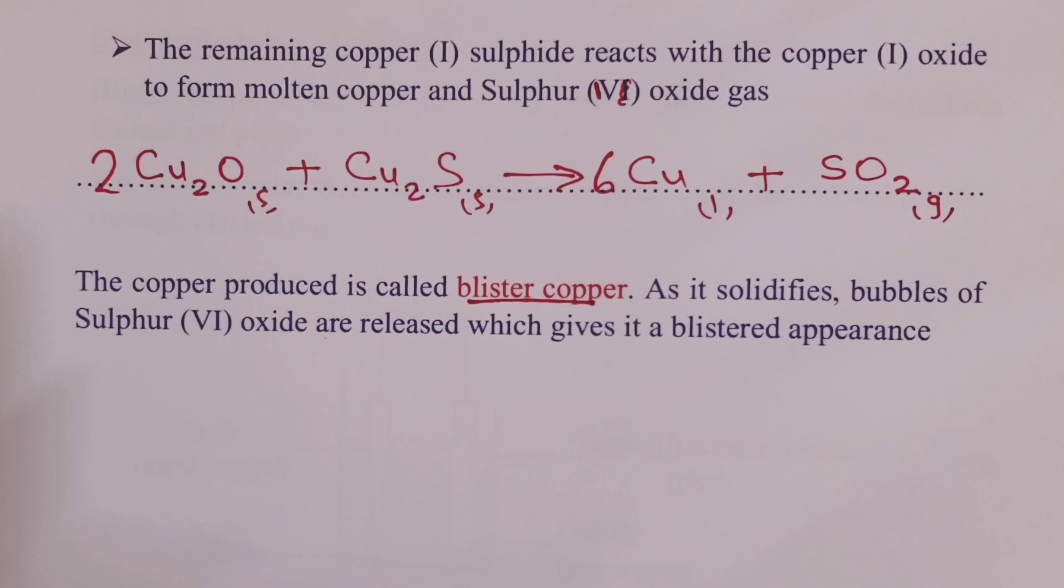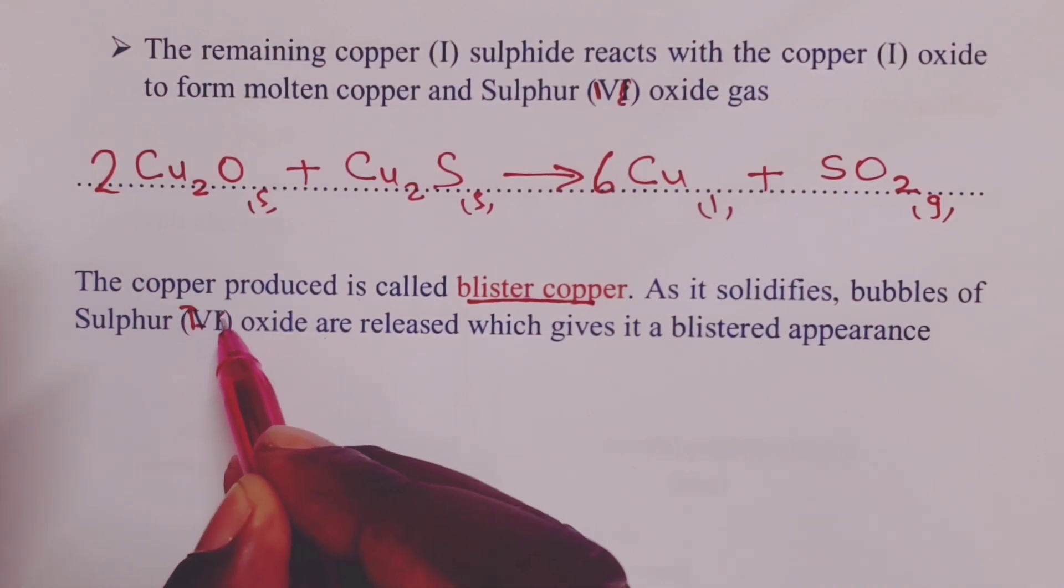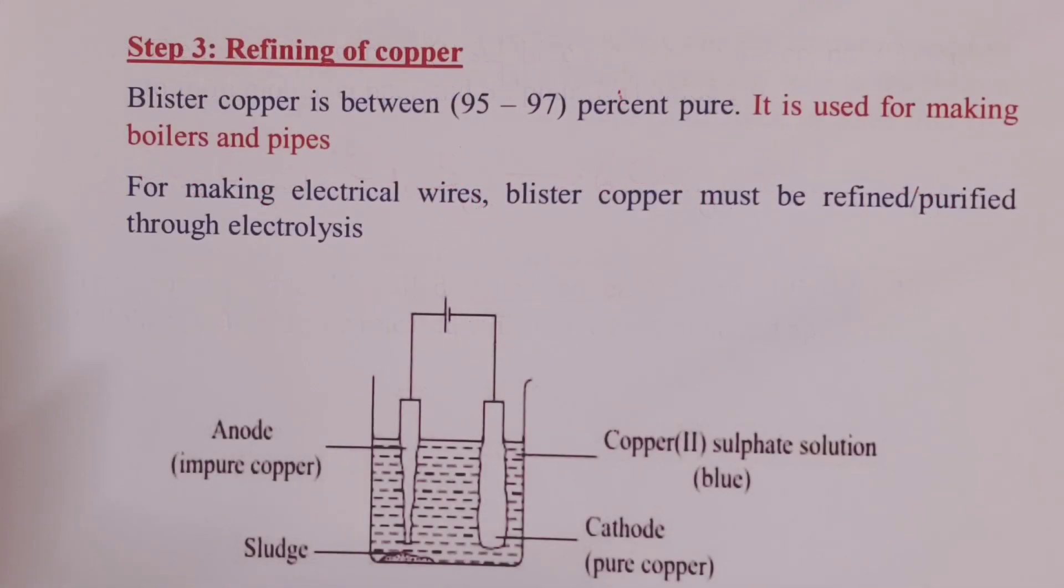This copper that is obtained here is usually called blister copper. Why blister copper? It is called blister copper because as it solidifies, bubbles of sulfur-4-oxide are released, which gives it a blistered appearance.